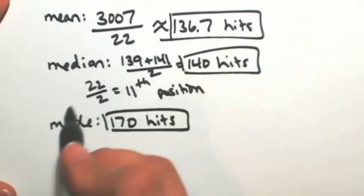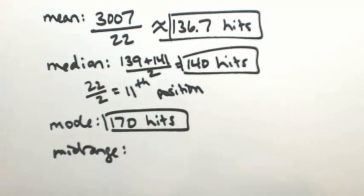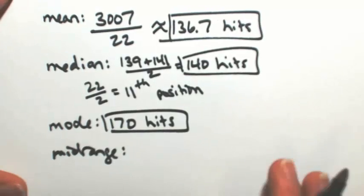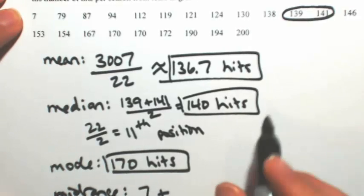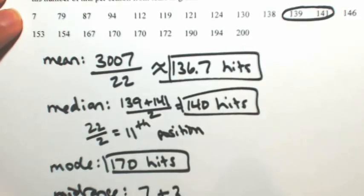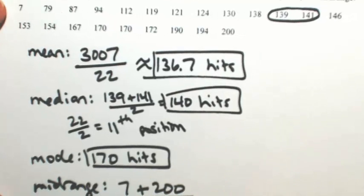And then lastly is finding the mid-range, which is finding the average of the lowest and the highest. Looking at the data, the lowest is 7 and the highest is 200. So averaging that out, we have 7 plus 200 divided by 2.